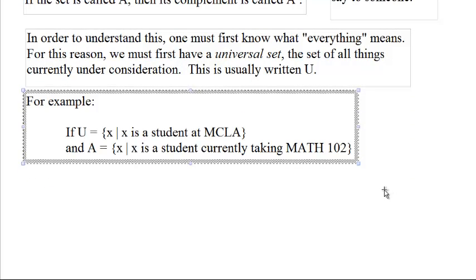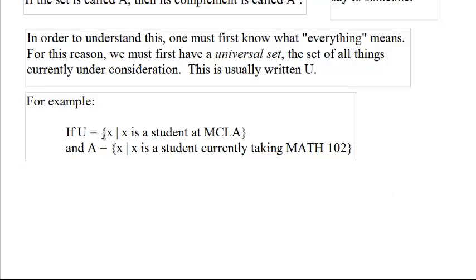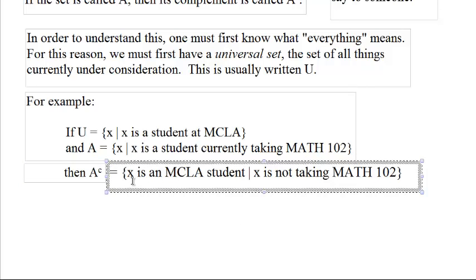For example, if U is the set of all Xs such that X is a student at MCLA, and A is the set of all Xs such that X is a student currently taking Math 102, then what is A complement? A complement is all of the things from the everything, which is all of the students at MCLA, such that they are not in A, they are not currently taking Math 102. That would be the set of all Xs, X is an MCLA student, but X is not taking Math for the liberal arts.